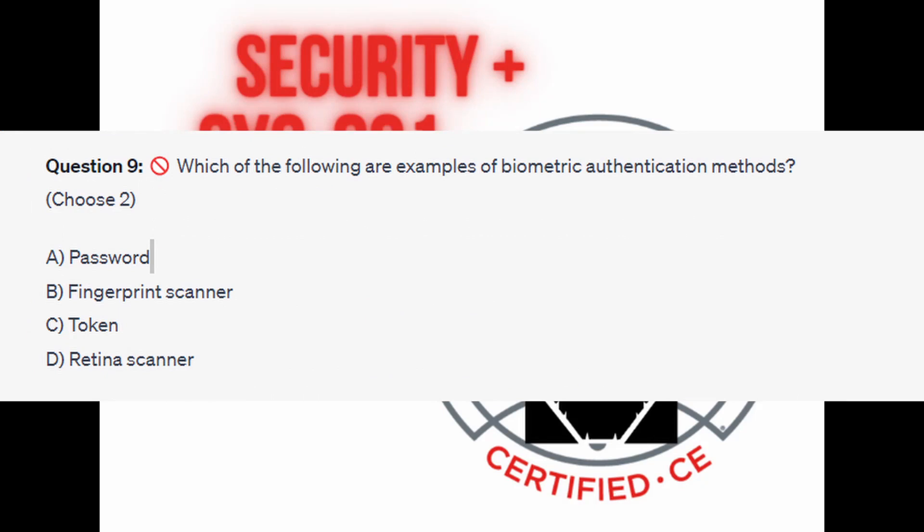Question number nine: which of the following are examples of biometric authentication methods? Choose two. Is it A, password? Is it B, fingerprint scanner? Is it C, token? Or is it D, retina scanner?